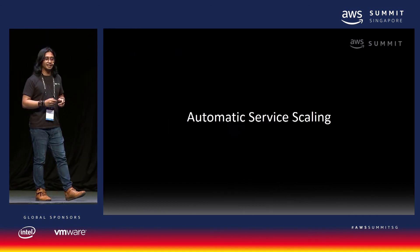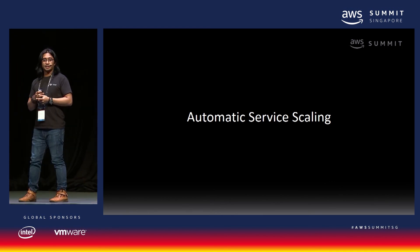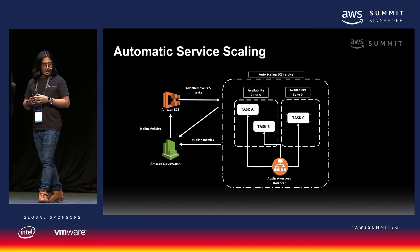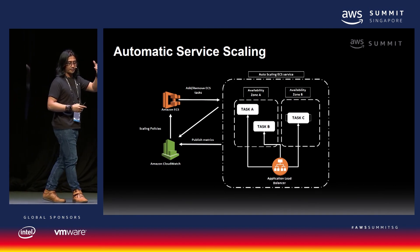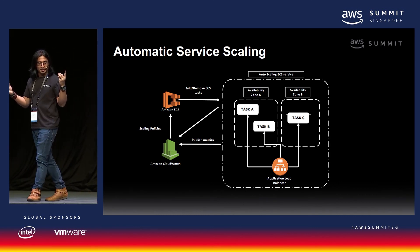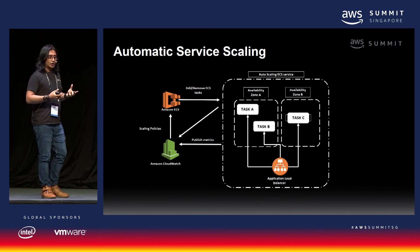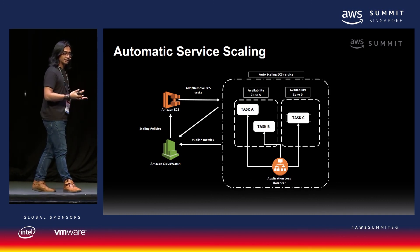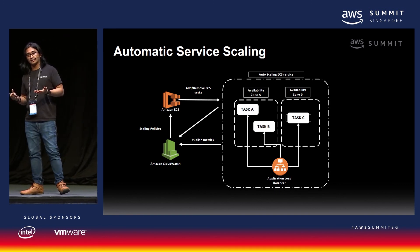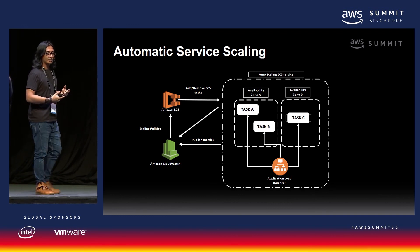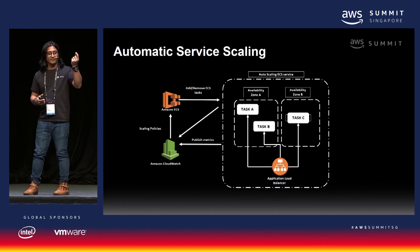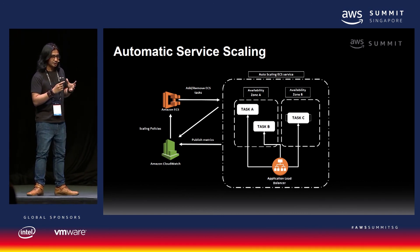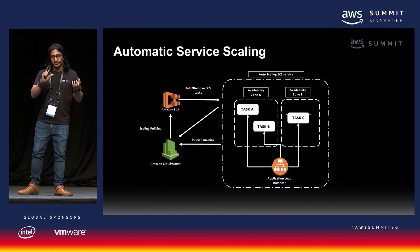The second pattern is automatic service scaling. With Amazon ECS, you can easily scale your containers using CloudWatch. For example, with tasks running across multiple availability zones, you can define a policy to trigger auto-scaling when a task instance reaches 70% CPU threshold. When requests come in and a container reaches that 70% CPU threshold, scaling kicks in automatically.